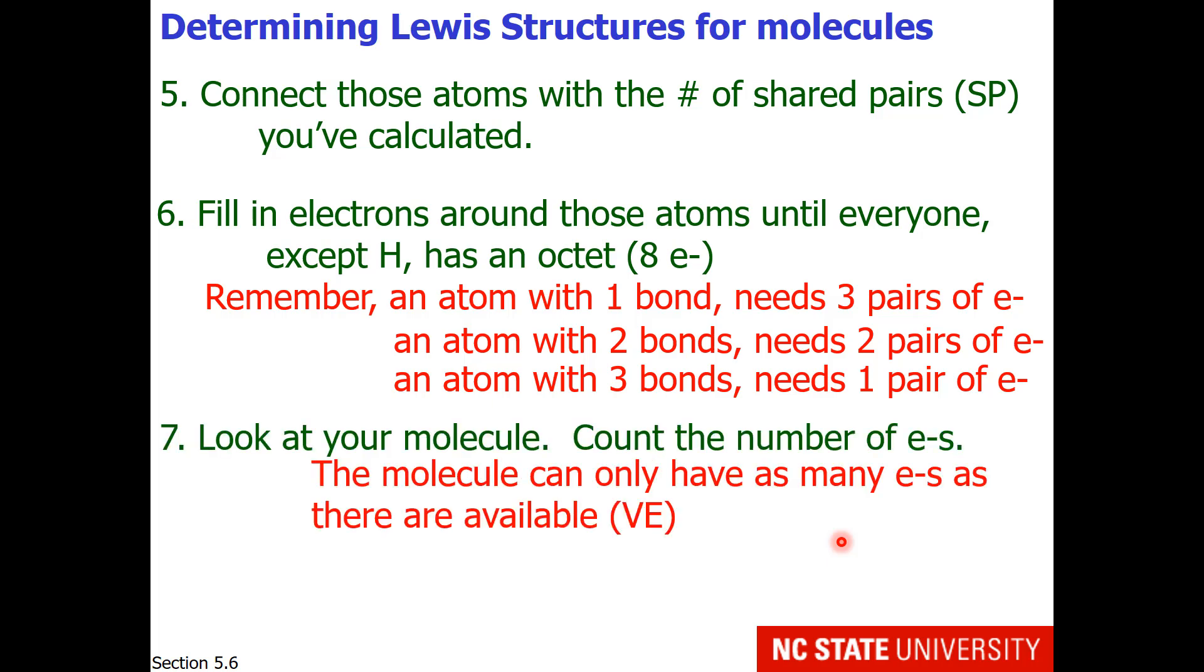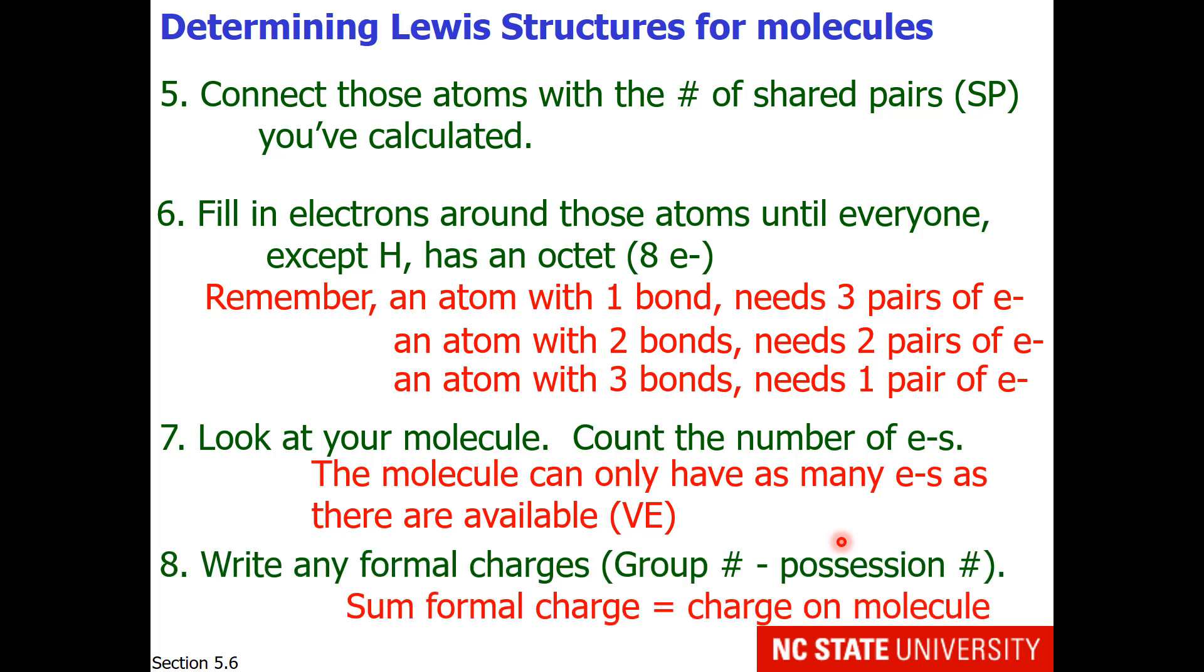You should always double-check your work, so look at the molecule and count the number of electrons. That should add up to the number of valence electrons, because that's the number of electrons available in the compound. There will be more detail later on how to get formal charge.